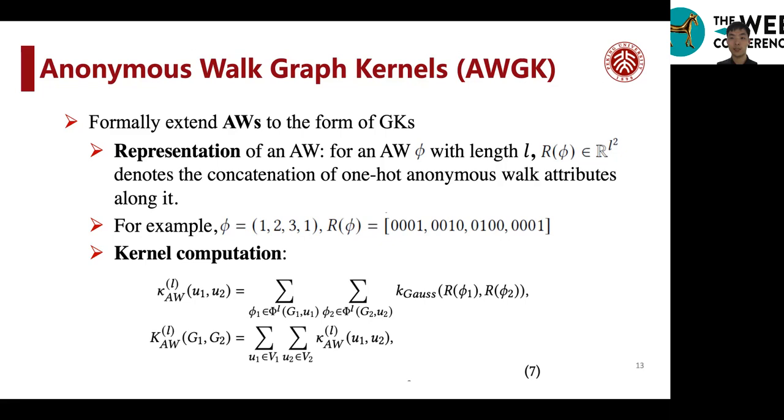its feature space lies in the L squared dimensional vector space that denotes the concatenation of one-hot attributes along it. For example, if phi equals 1, 2, 3, 1, then R phi can be done in the one-hot manner.